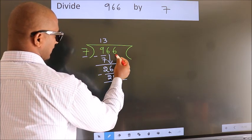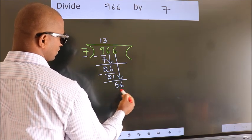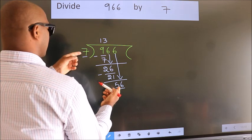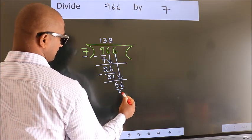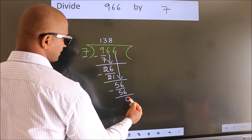After this, bring down the beside number. So, 6 down. So, 56. When do we get 56 in the 7 table? 7 times 8 is 56. Now, we subtract. We get 0.